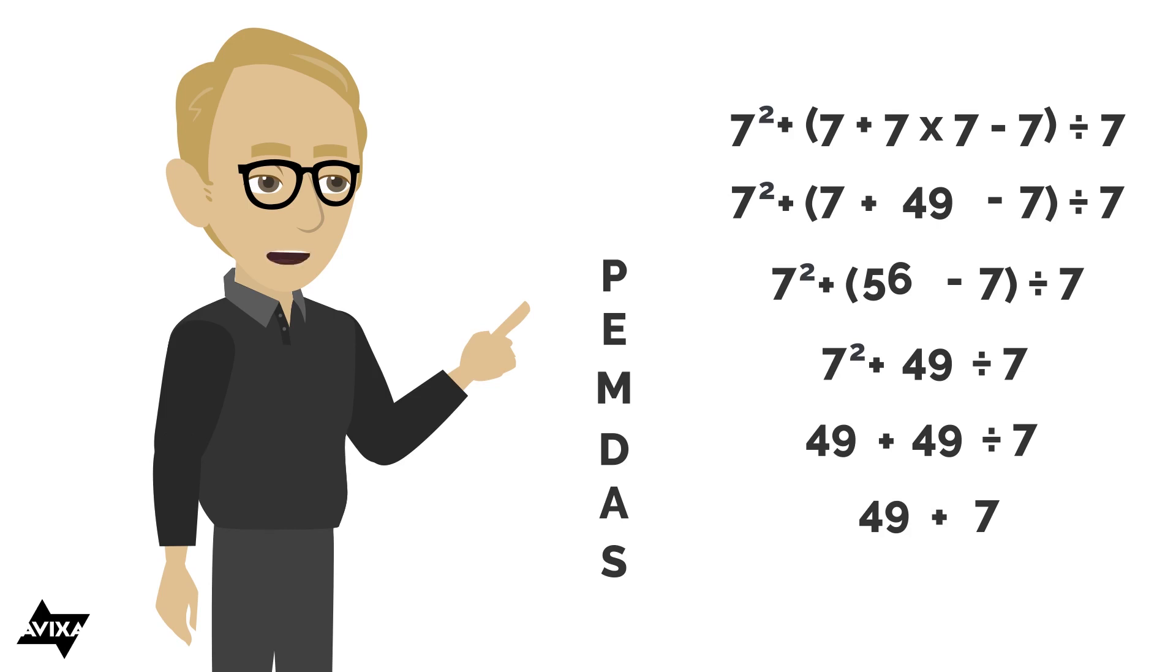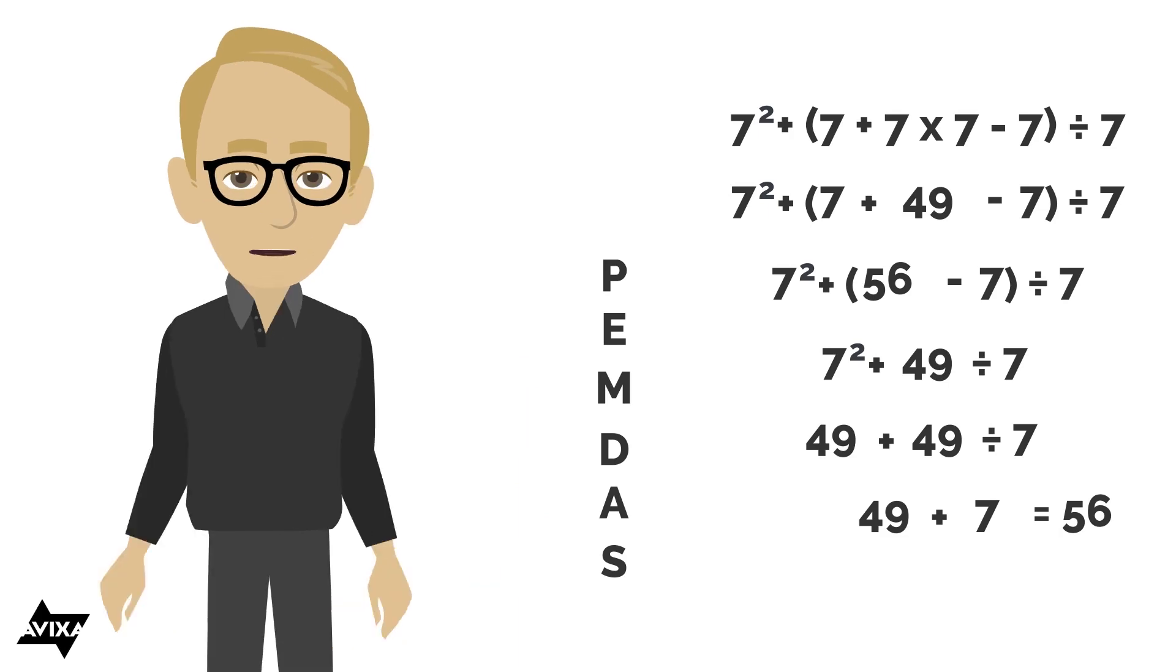So now we're at 49 plus seven. The only thing left is addition, and that is going to equal 56. And that's how we do all of these multiple operations, following our order of operations, PEMDAS.